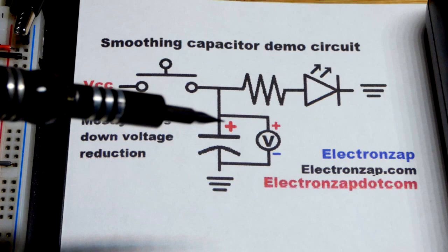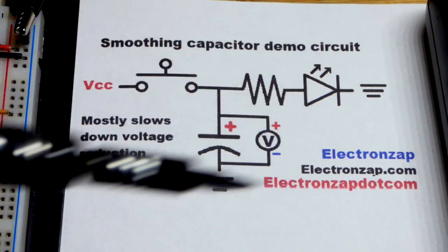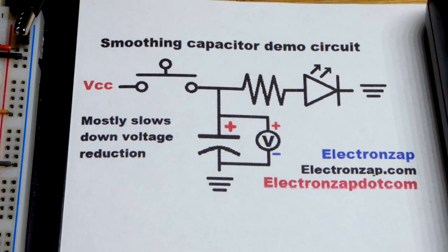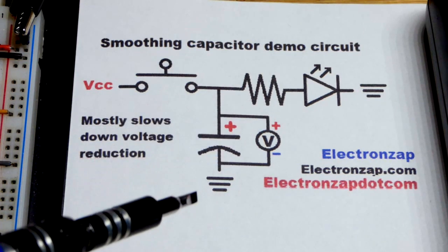Right there. That's what a smoothing capacitor is commonly used for. This is a demonstration version though, just to show the basic principle in a more obvious way.